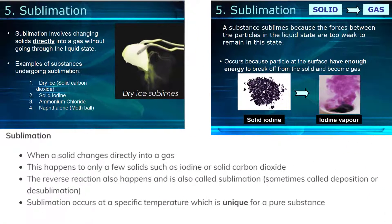Sublimation: when a solid changes directly into a gas. This happens to only a few solids such as iodine or solid carbon dioxide. The reverse reaction also happens and is also called sublimation, sometimes called deposition or desublimation. Sublimation occurs at a specific temperature which is unique for a pure substance.